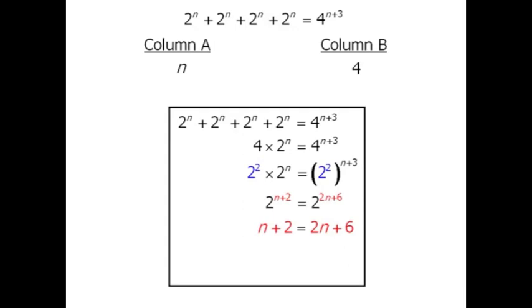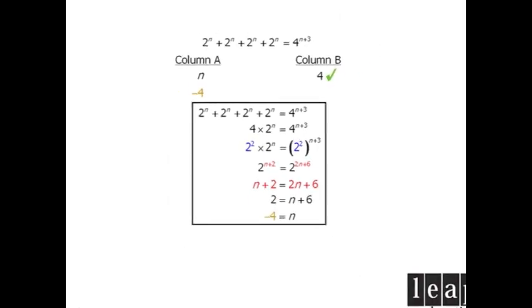From here we'll subtract n from both sides. And finally we'll subtract 6 from both sides to get n equals negative 4. So column A equals negative 4 in which case column B is greater and our answer is B.